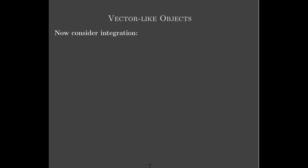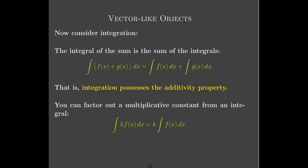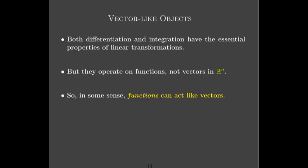Something similar happens with integration. You can integrate the sum of functions by integrating each function individually and adding those integrals together — the integral of the sum is the sum of the integrals — so integration has the additivity property. You can also factor out a multiplicative constant, so integration has the homogeneity property. Both differentiation and integration have the key ingredients to be linear transformations, but they work on functions, not vectors in Rn. In some sense, functions can act like vectors.